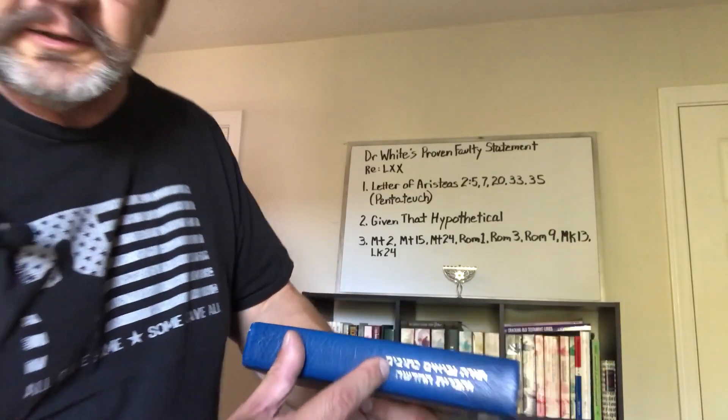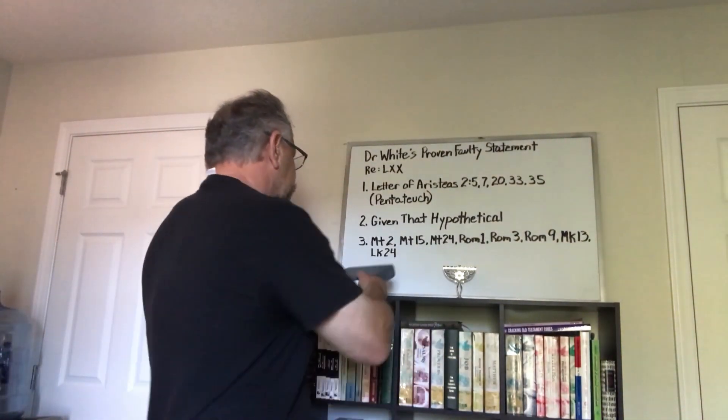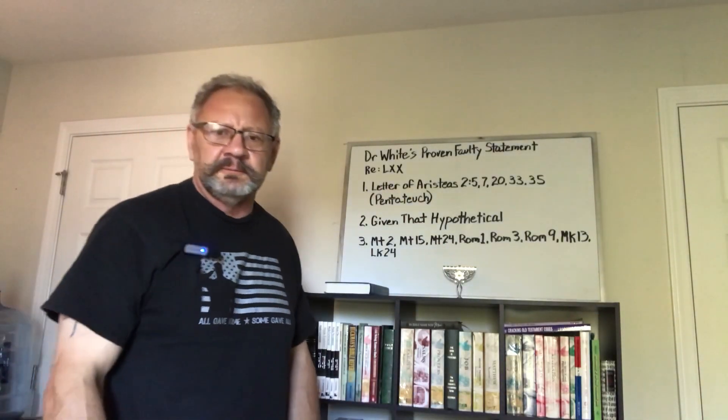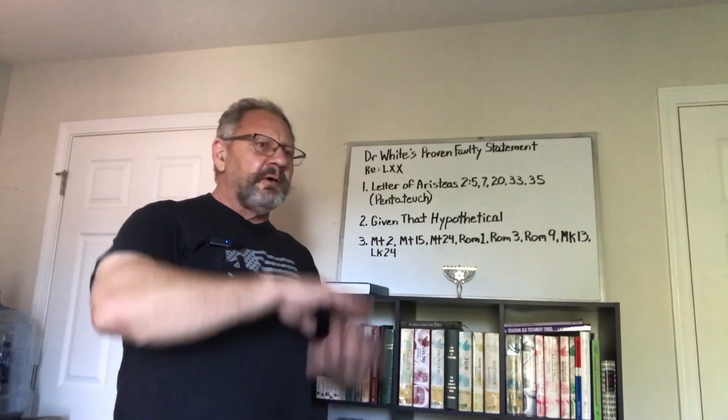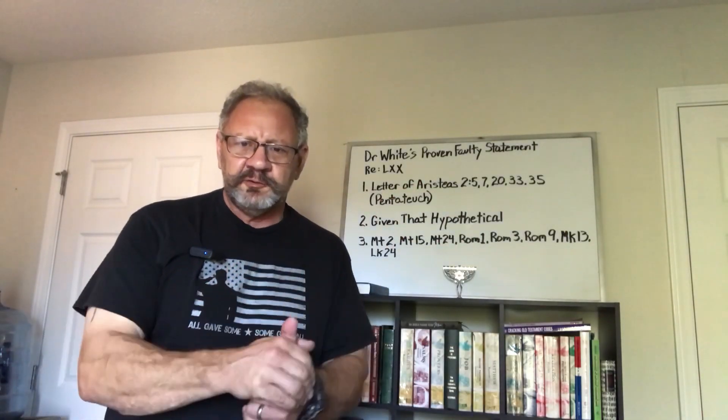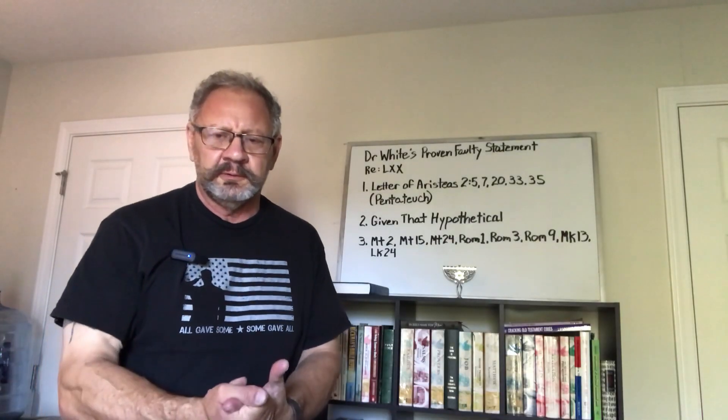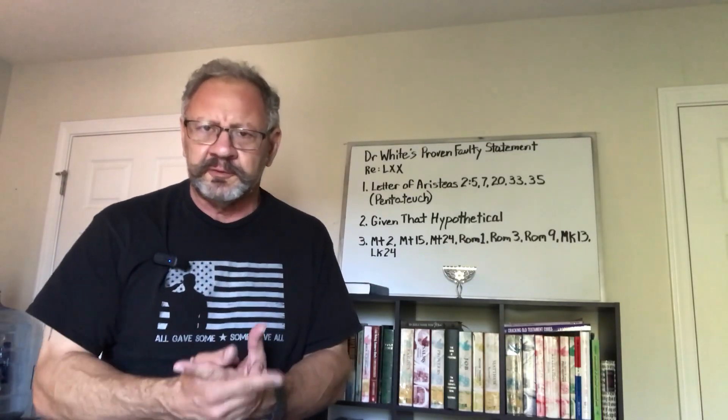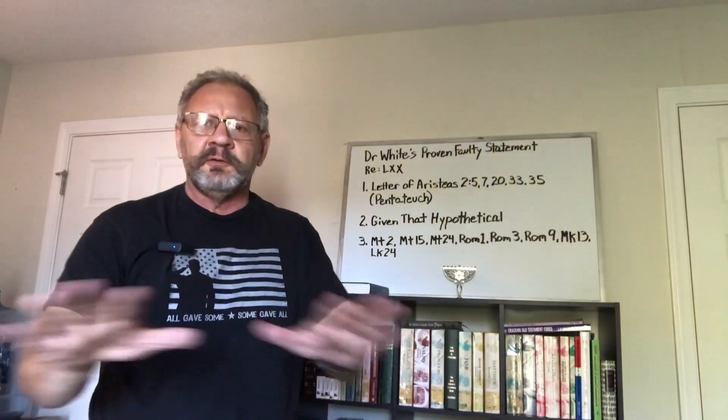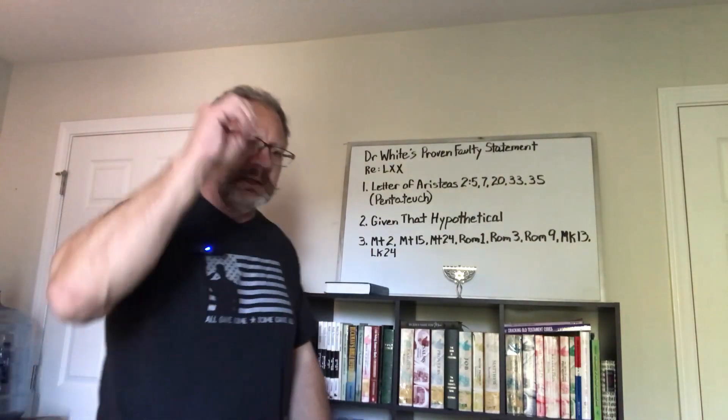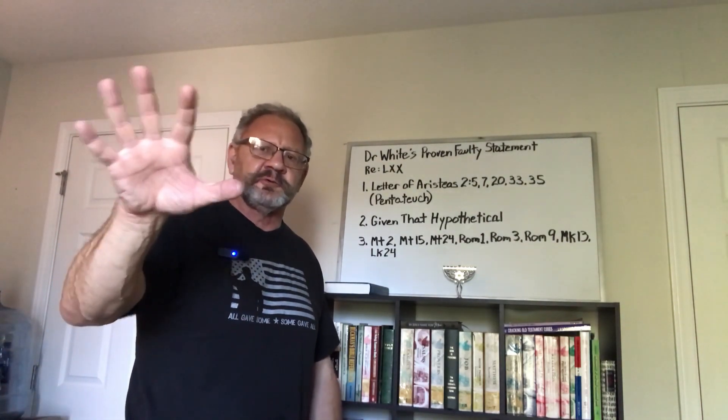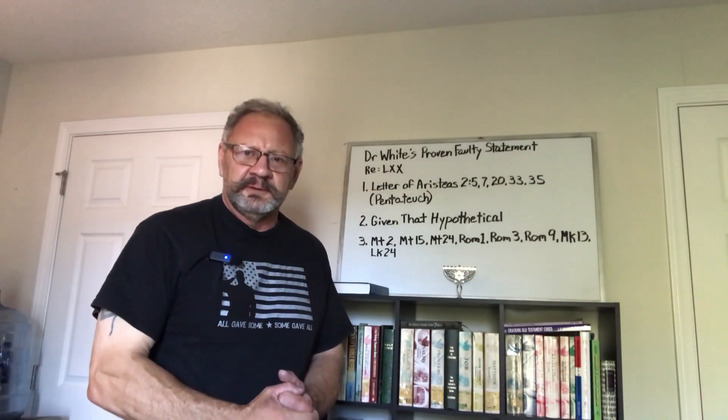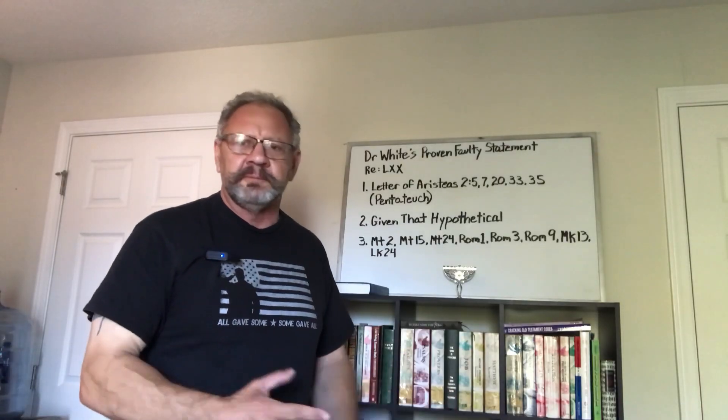And so assuming and giving Dr. White that hypothetical, that means that all of those passages that Yeshua and his apostles quote that are not from the first five books—and we've listed some, we'll go over them in a minute—that means that all those passages that Yeshua and his apostles quote that were not in the first five books of Moses could not possibly have been quoted or cited from the Greek Septuagint. It's impossible.